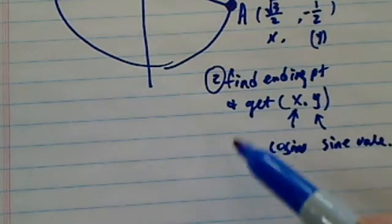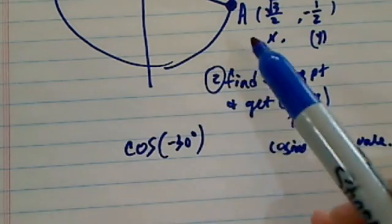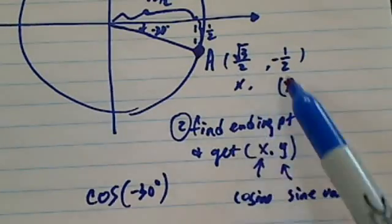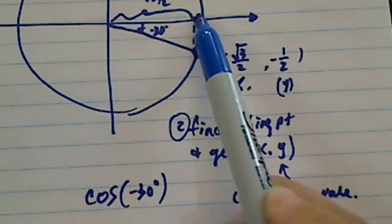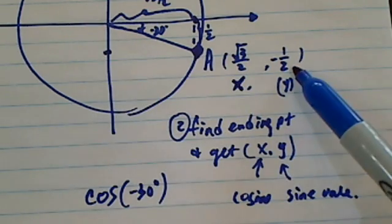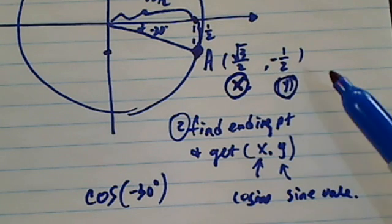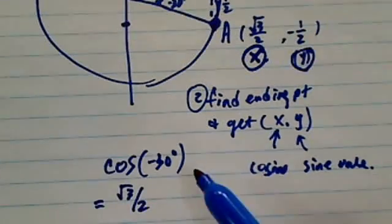So from this cosine, let's go through it. Minus 30 degrees, we found our ending point, which is over here. I went ahead and I found my coordinates for it. I know x is the longer leg, radical 3 over 2. Y is the shorter leg, so it's half. And since it's negative, I have a minus here. And then I know from here, this is always my cosine value. Since it's cosine I'm looking for, I'm going to look for the x-coordinate for that point, which is radical 3 over 2.